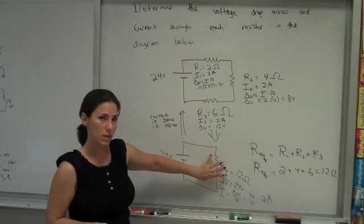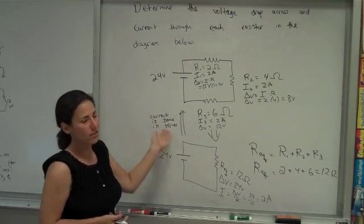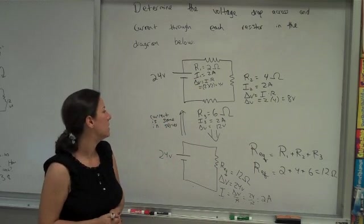So again, in series, you figure out an equivalent resistance. And then you go back to your original circuit, the thing you bring with is the current. Had you done it in parallel, the thing that would be the same is the voltage drop.